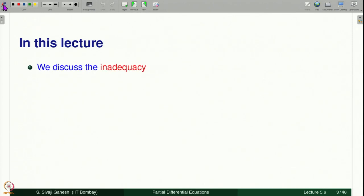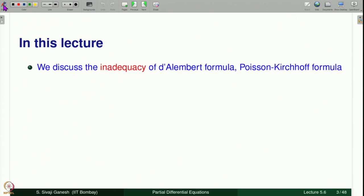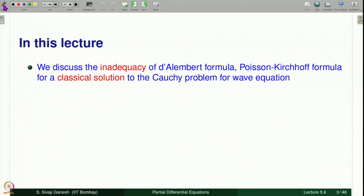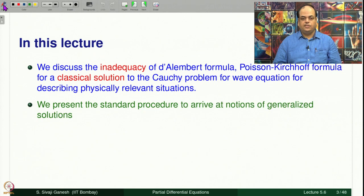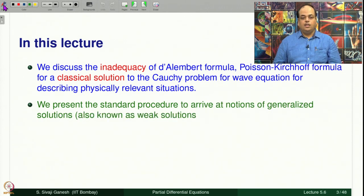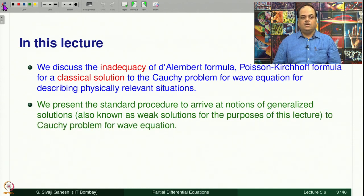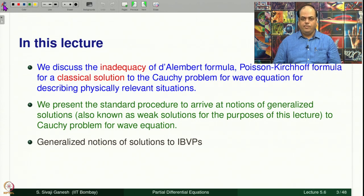In this lecture, we discuss the inadequacy of the d'Alembert formula and Poisson-Kirchhoff formula for a classical solution to the Cauchy problem for the wave equation for describing physically relevant situations. We present the standard procedure to arrive at notions of generalized solutions, also known as weak solutions, for the Cauchy problem for the wave equation. Generalized notions of solutions to IBVPs may also be defined similarly.